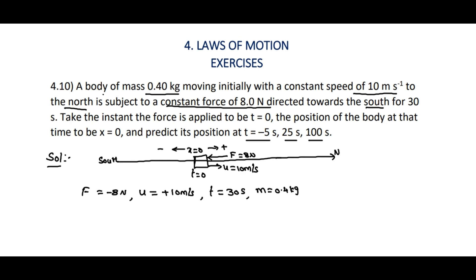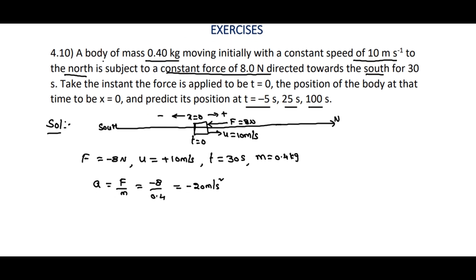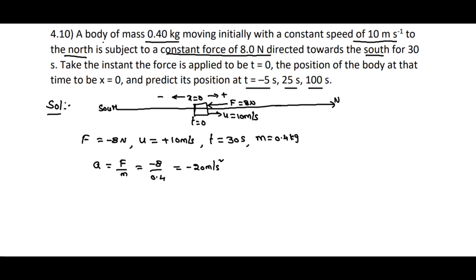Now the acceleration a equals F divided by m, that is minus 8 divided by 0.4, which equals minus 20 meters per second squared. This is the acceleration of the body. Now we will discuss different cases.